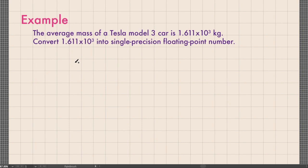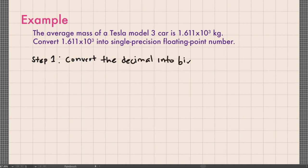For example, the average mass of a Tesla Model 3 car is 1.611 times 10 raised to 3 kilograms. Convert 1.611 times 10 raised to 3 into a single precision floating point number. Step 1: convert the decimal number into a binary number without the exponent. We get rid of the exponent by rewriting the number as 1611, making it easy to convert using the repeated division method.